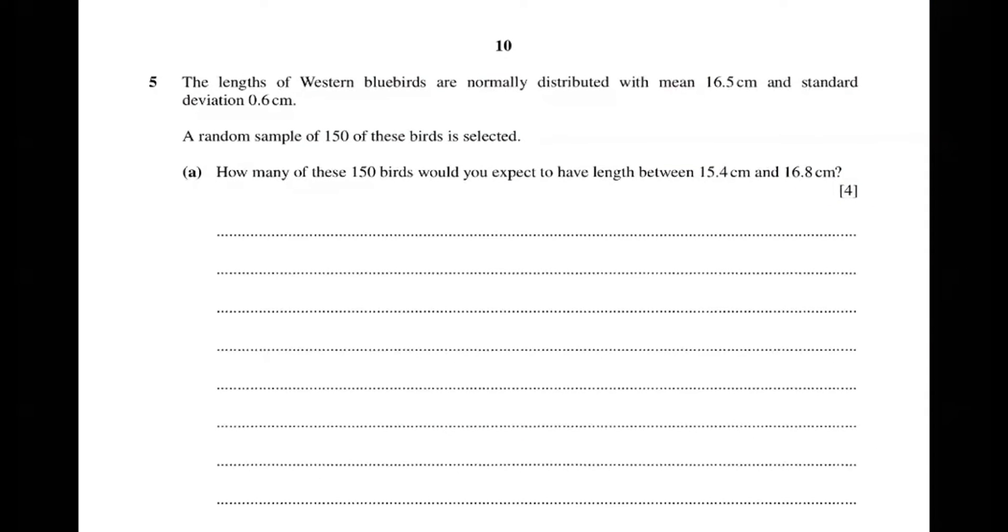This is not very easy. You have to find a probability of 15.4 to 16.8, it's a normal distribution. You want to write down the notation, 16.5 and 0.6 squared. So you're looking for a probability of 15.4 to 16.8.